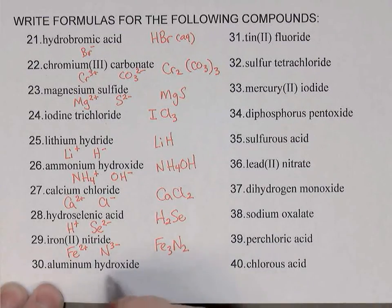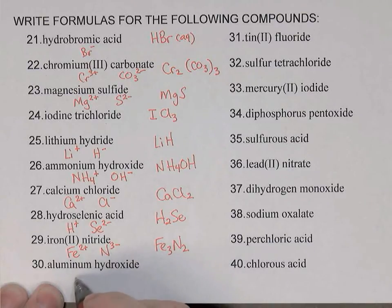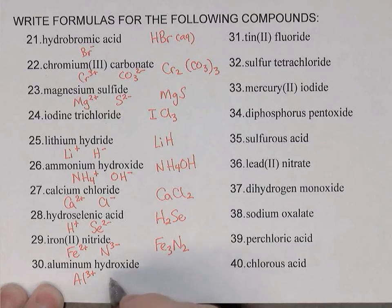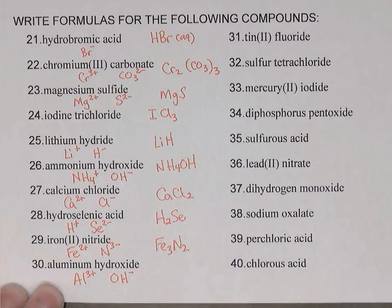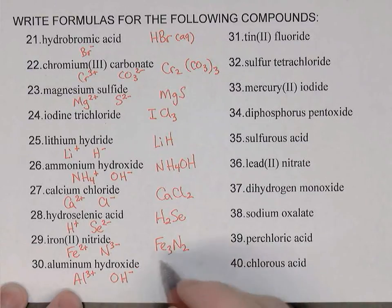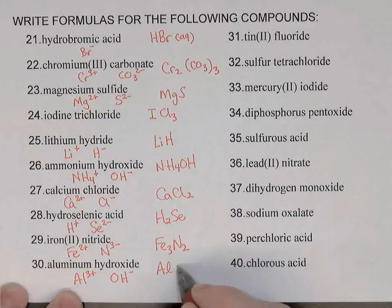Aluminum hydroxide is ionic — aluminum is a metal and hydroxide is a complex ion. Al³⁺: looking where aluminum is on the periodic table, it had three valence electrons so it loses them to become 3+. Hydroxide is OH-, a complex ion I've memorized. I'll need three hydroxides to cancel the charge on the one aluminum: Al(OH)3.